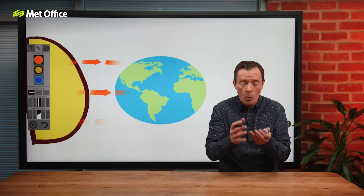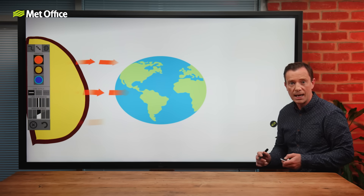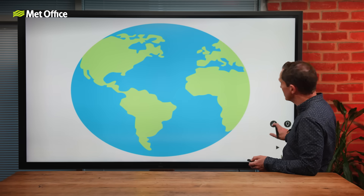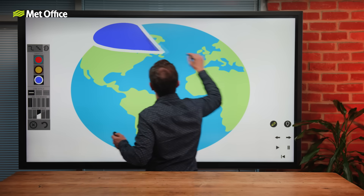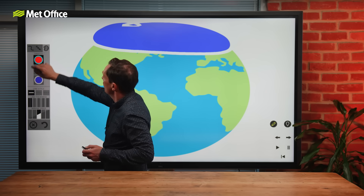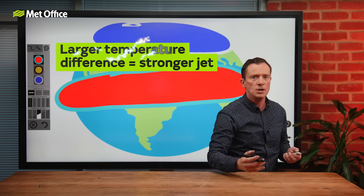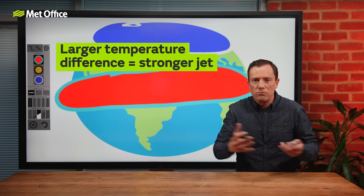In short, for the purposes of this video, what we need to understand is that the jet stream is basically fueled by the difference in temperature between the poles and the equator. So the larger the difference between the cold at the poles and the warm air at the tropics, the stronger the jet stream will be. The bigger the temperature difference, the more rapidly the atmosphere tries to even things out, and that generates a faster jet stream.